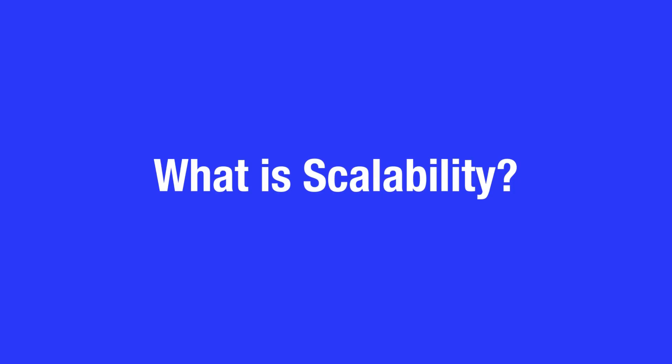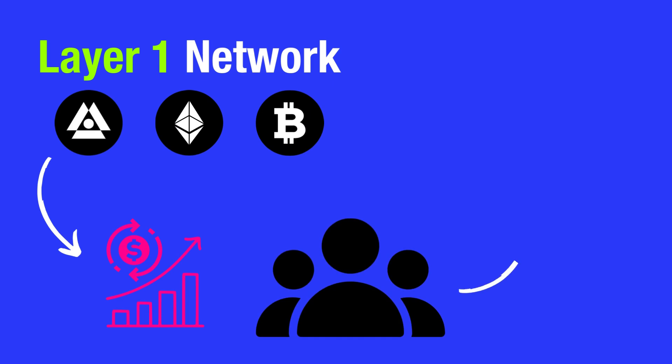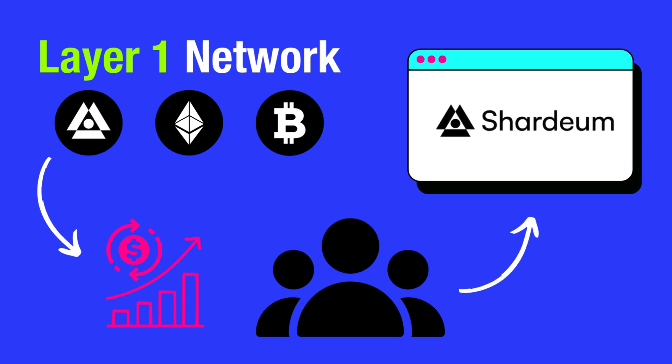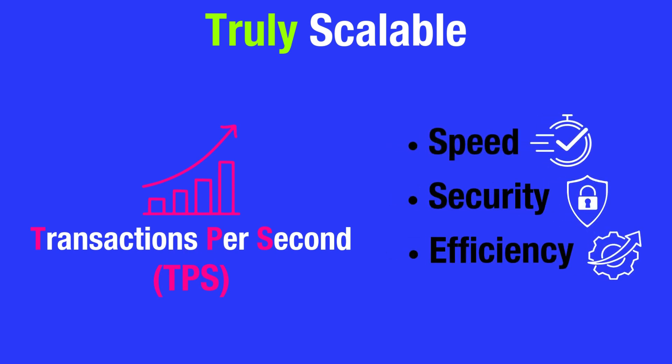What is scalability? The dominant conception of scalability on a Layer 1 network refers to the network's capacity to handle an increasing number of transactions as more users join and use more applications run on the platform. A truly scalable network can expand its capabilities to process more transactions per second (TPS) without compromising on speed, security, or efficiency.